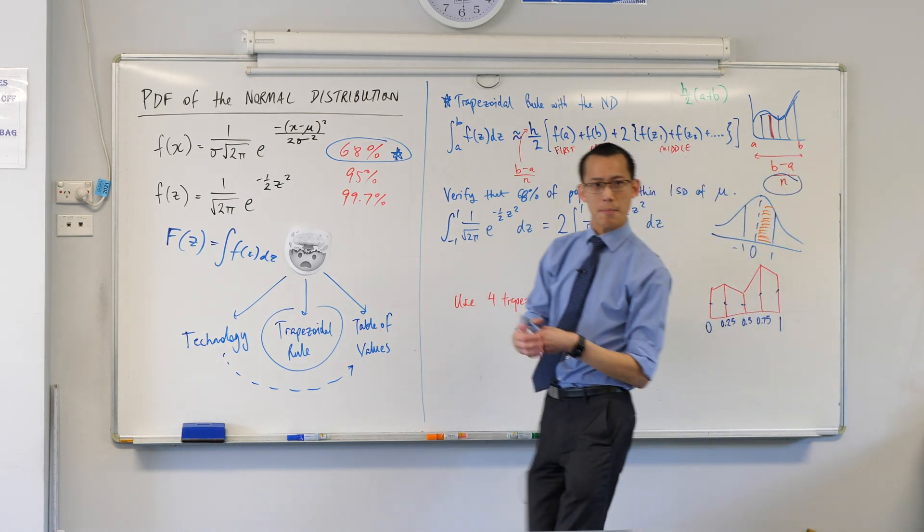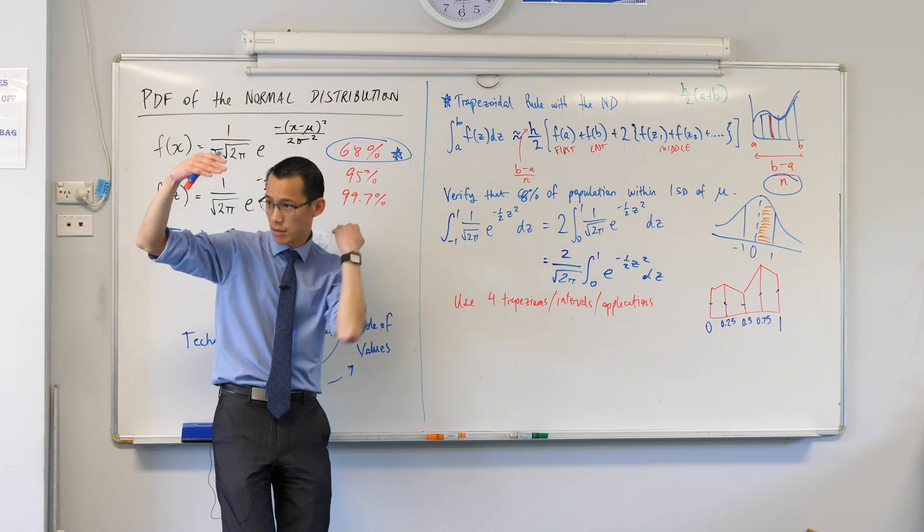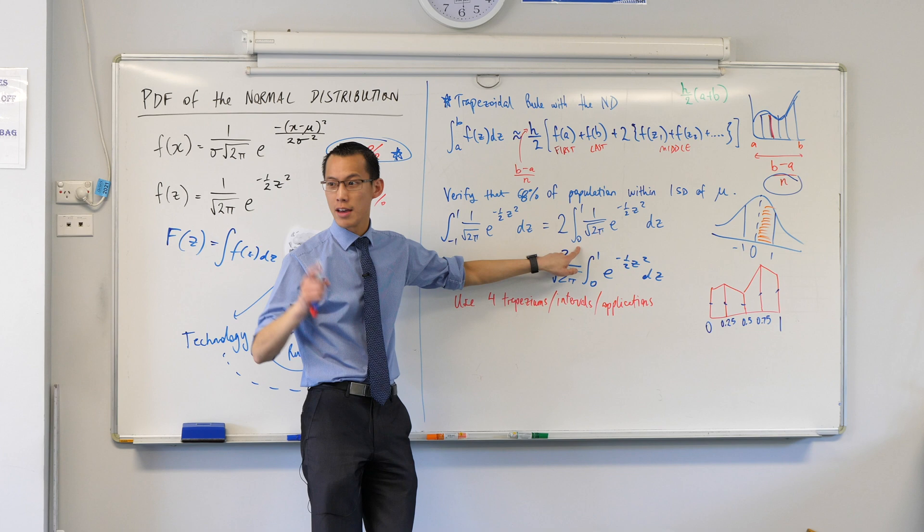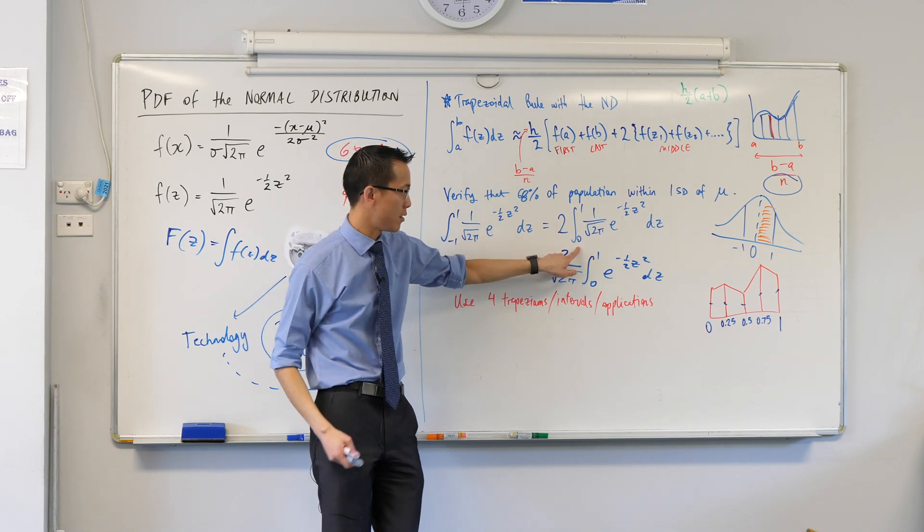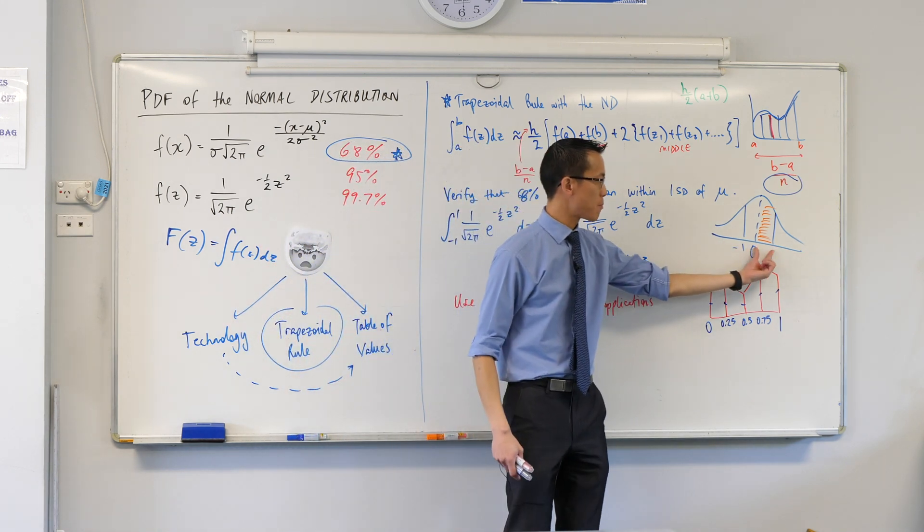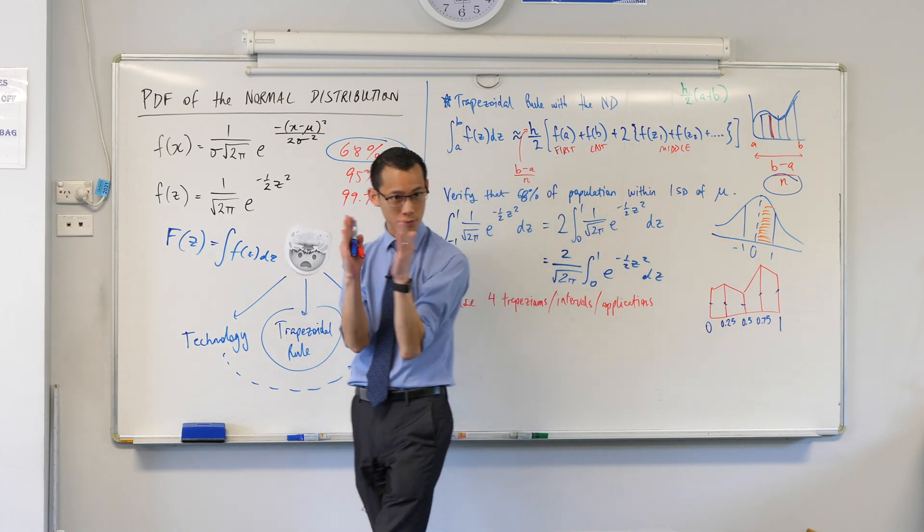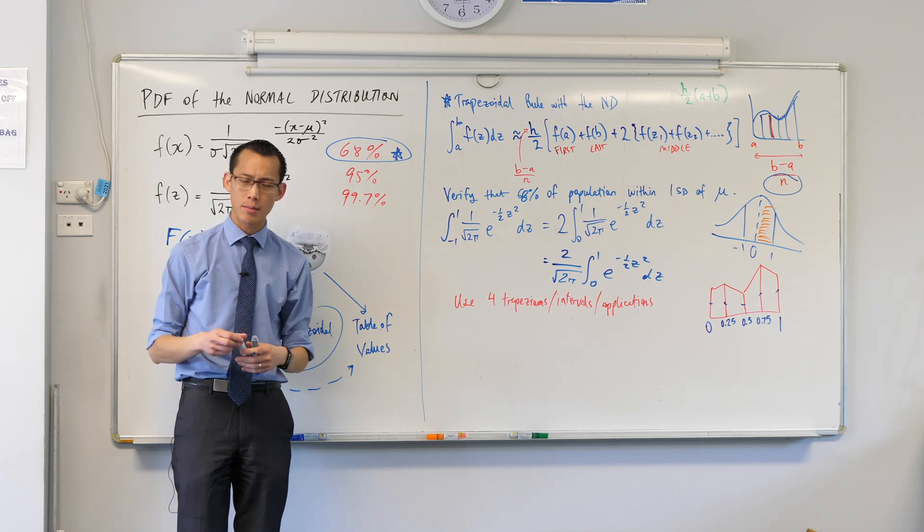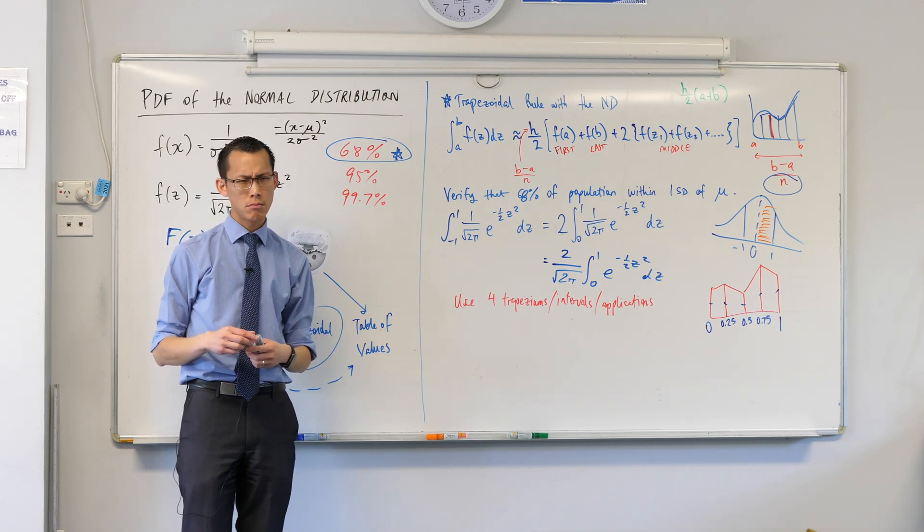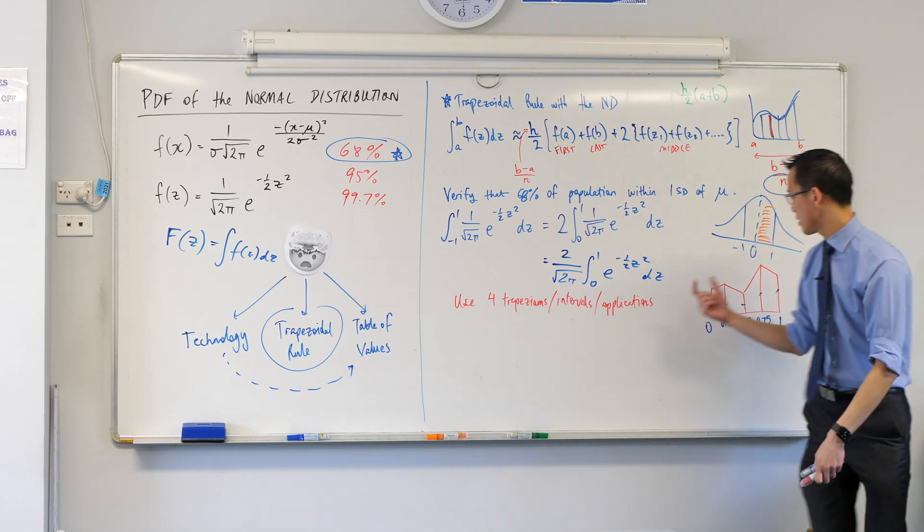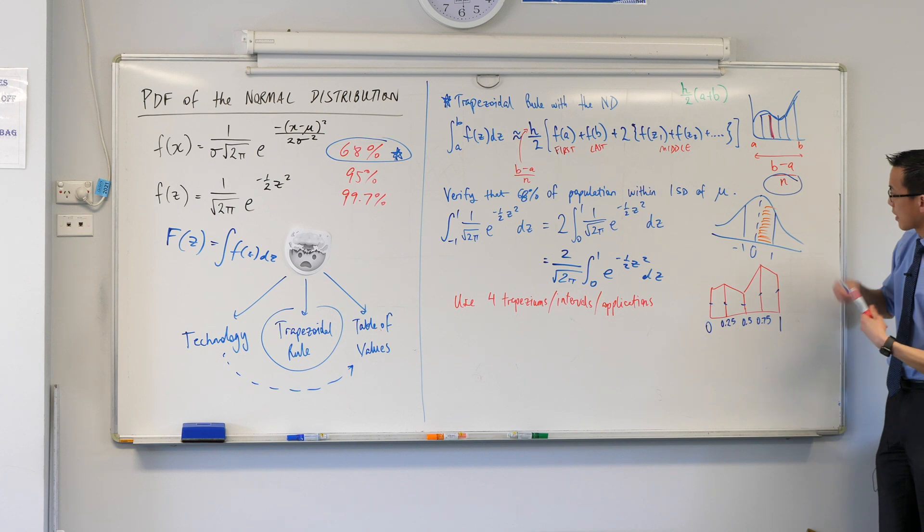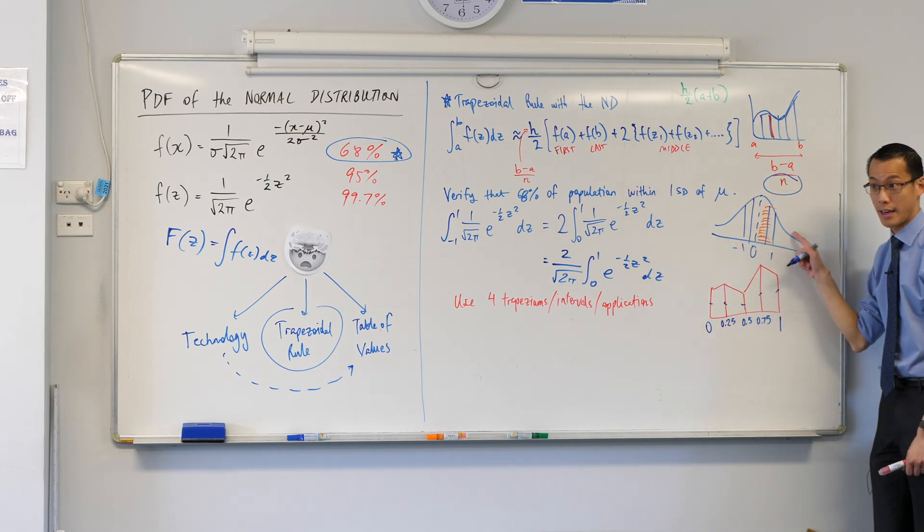Just one last thing before we actually get your calculators out. You know how we change the boundaries from negative one to one to zero to one? It's nice because zero is easy to evaluate. There's one other good advantage that comes from this, which is that because we're approximating over a smaller interval, we get more accuracy. Does that make sense? I kind of get eight trapeziums for the price of four.